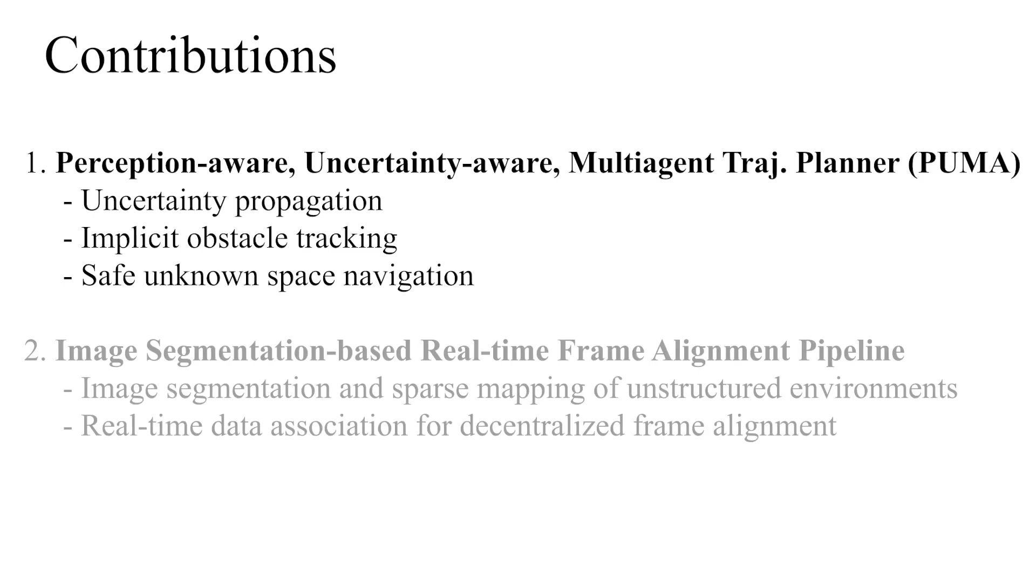We first introduced the PUMA trajectory planner. PUMA has three key features: uncertainty propagation, implicit obstacle tracking, and safe unknown space navigation.